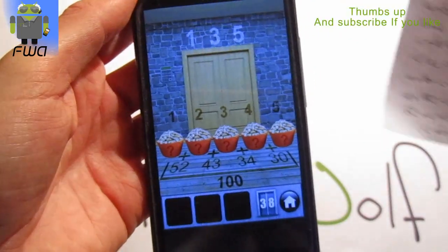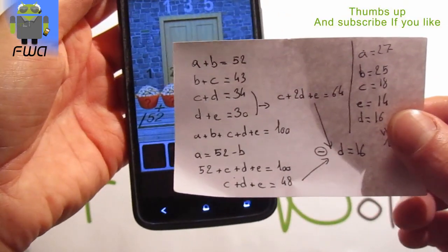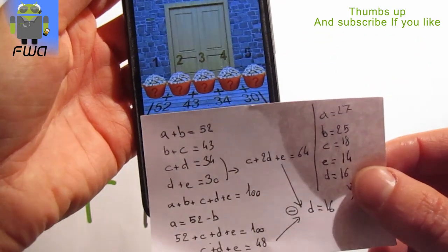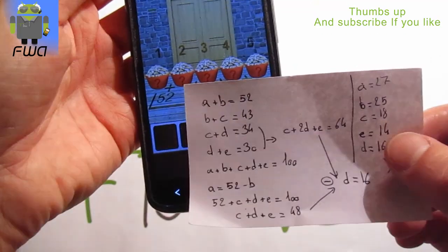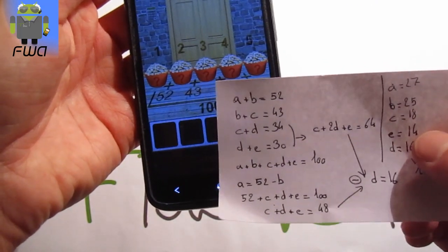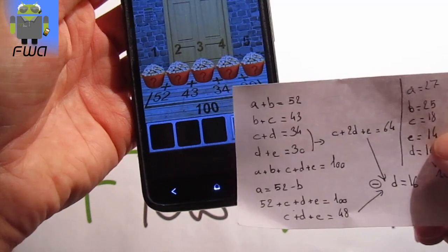Okay, so I have calculated it. Let's go. We get a plus b equals 52. This is 1 and 2. B plus c equals 43. C plus g equals 34. And g plus e equals 30.